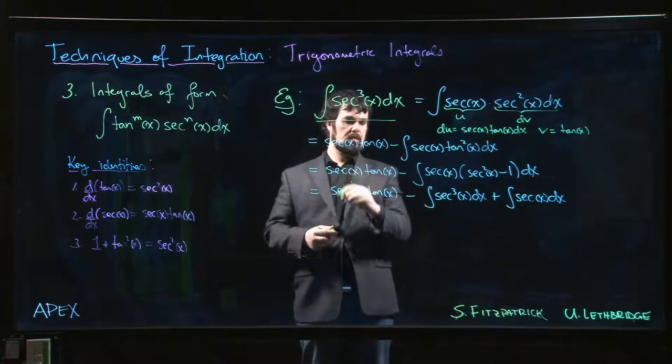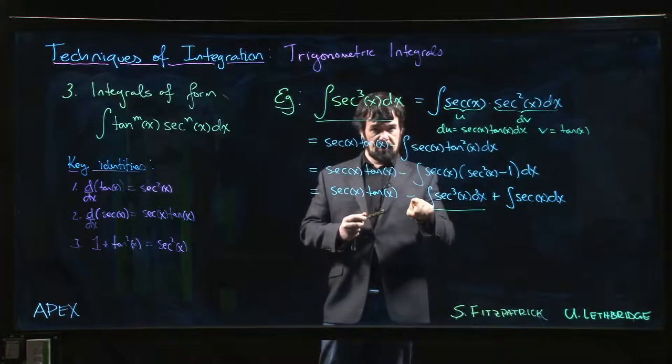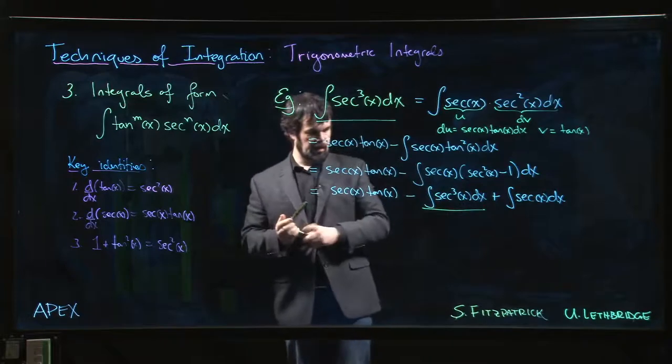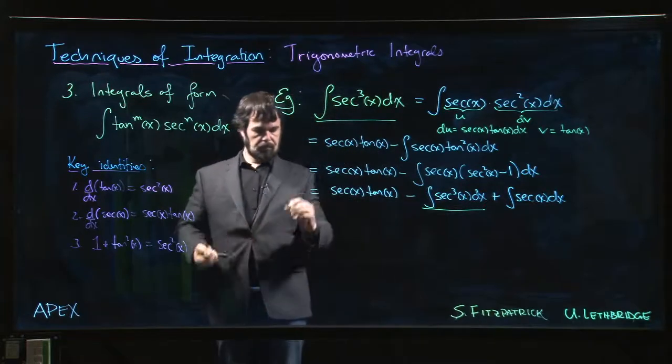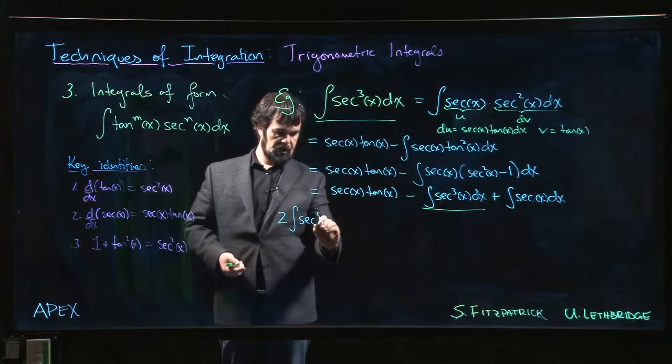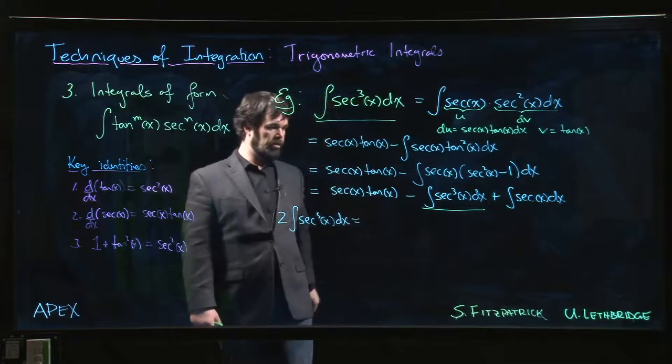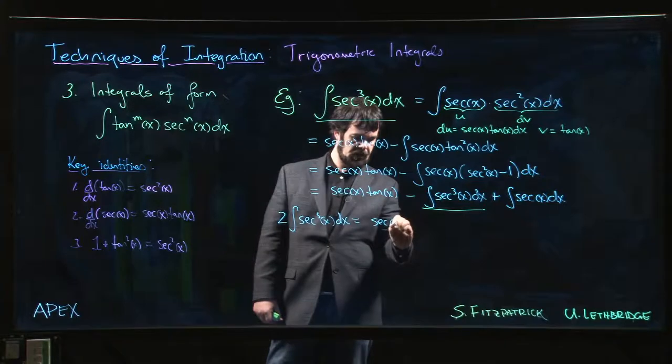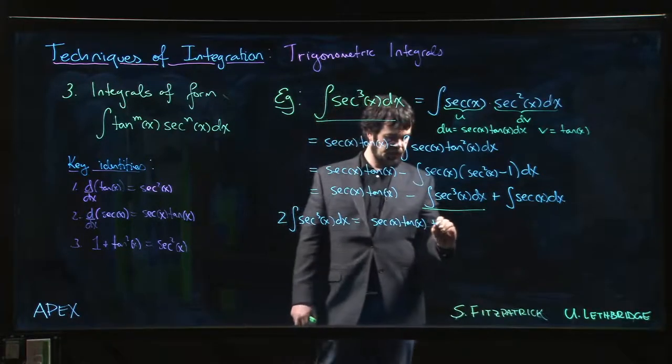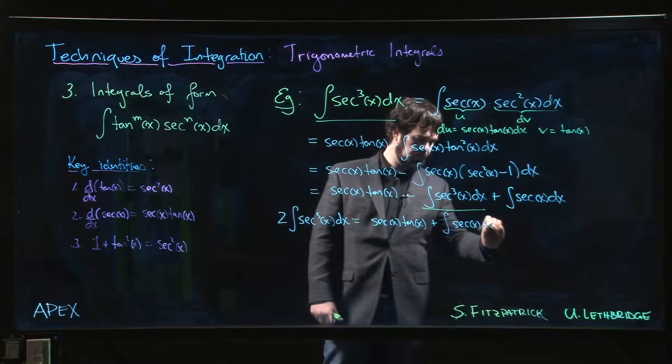We started here and ended up here with another one with a minus sign in front. This is like e to the x cos x all over again. We can move this to the other side. We get that 2 times the integral of secant cubed x equals secant x tan x plus the integral of secant x dx.